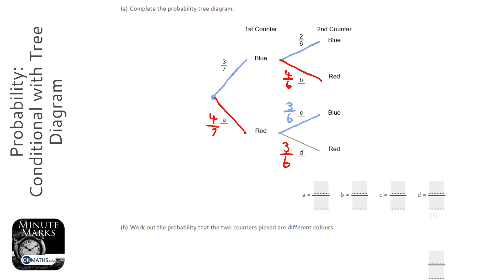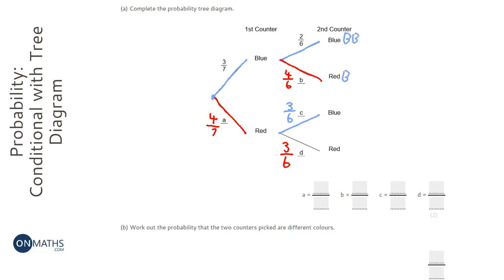Question B says: work out the probability that the two counters picked are different colours. So let's follow our routes. Going up then up: blue and then blue. Then blue and then red. Then red and then blue. And finally red and then red — always starting from this point here.